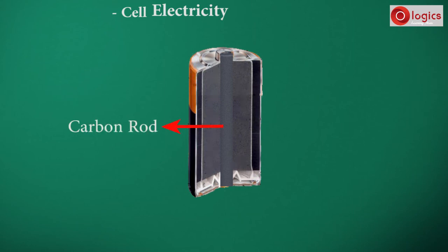The carbon rod is known as a current collector. These are made up of chemicals and contain chemical energy.